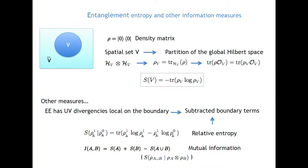Let me introduce new measures of information useful for what I will discuss: relative entropy and mutual information. The entanglement entropy is divergent and has a non-universal character in general. But this can be resolved by using mutual information and relative entropy. In relative entropy, you have one region and two states. Mutual information is a special case of relative entropy defined using two regions.